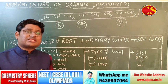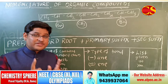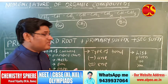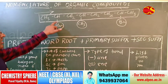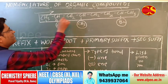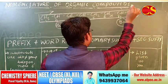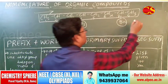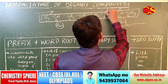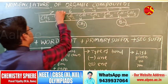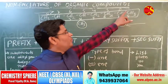Then numbering will be done in such a way that the substituents will find the minimum number. If we choose one direction, we number from one to eight. If we choose the other direction, we also number one to eight. In both directions, you have a substituent at the second position.